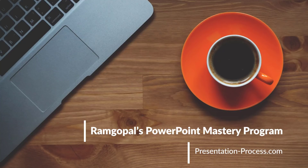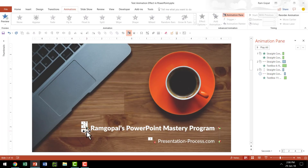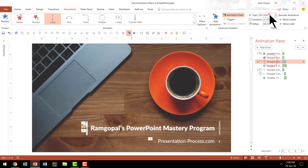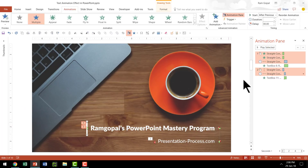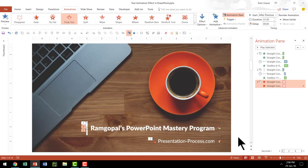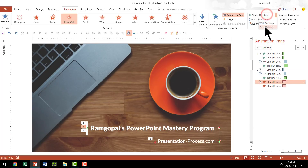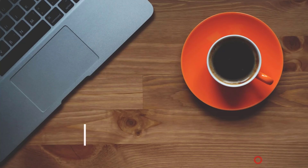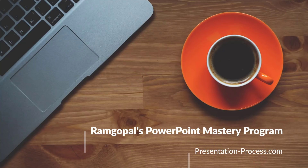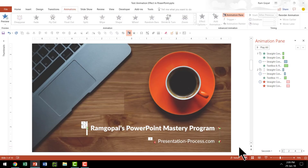That is the base animation. Now there is one final thing we need to do to complete it. I want the movement to happen as soon as the lines are introduced, so I am going to set this to after previous. Then I am going to add another animation to these elements — add animation, float out — because we don't really require those lines after they have done their job; they unnecessarily occupy space and draw attention. So after all the animations are over, we are going to have these lines go away, set to after previous.